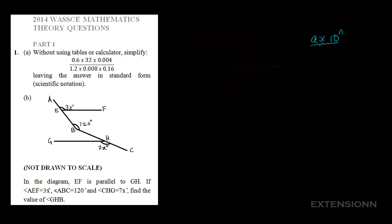Your final answer should be in the form A times 10 to the power N, where A represents any number that is greater than or equal to 1, or A is a number which is less than 10. So the values of A should be between 1 and 10. Also, N should be any positive or negative whole number. You'll see what we mean when we solve this question.